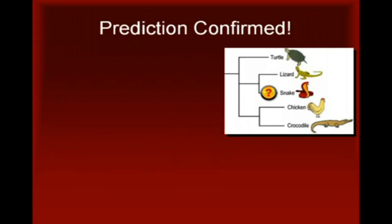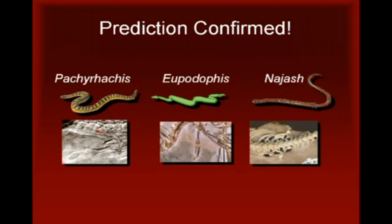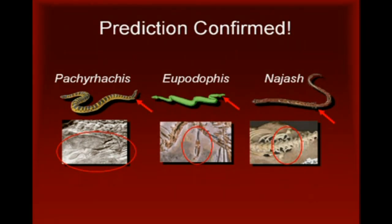This prediction was confirmed by the discovery of the fossil remains of the oldest known snakes, dating back to around 90 million years ago, each of which shows evidence of hind limbs. Among these fossils is the most primitive known snake, Najash, found in 90 million year old rocks from Argentina. This specimen not only shows evidence of robust, functional hind limbs, but also a pelvis supported by a sacrum. All of these features were predicted to be found in the limbed ancestors of snakes.